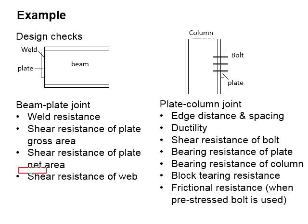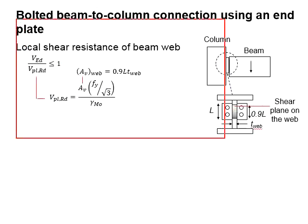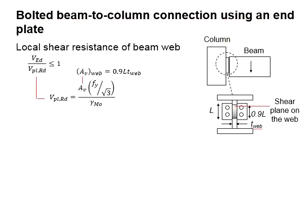And then lastly, you need to check for the shear resistance of the web. This is referring to this slide. The effective shear planes are indicated in the diagram here, which is calculated by multiplying the thickness of the web times 0.9 times the effective height of the steel plate, as given in the formula here.